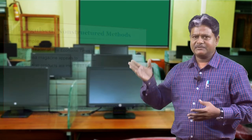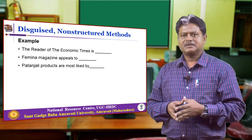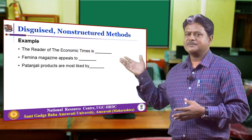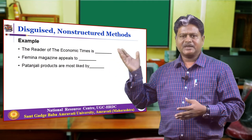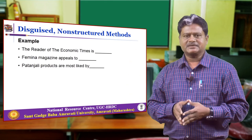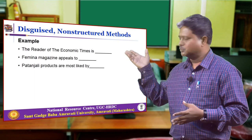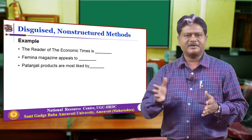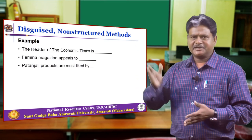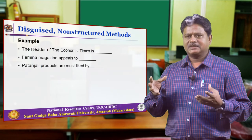For example, this test can be designed to know about readers. The first statement is: 'The reader of Economic Times is ___.' Depending on the respondent's idea, they will complete the sentence. The second statement is: 'Femina magazine appeals to ___.' Again, the respondent completes the statement based on their own idea. The third statement is: 'Patanjali products are most liked by ___.' The respondent completes these statements based on their own perspective.